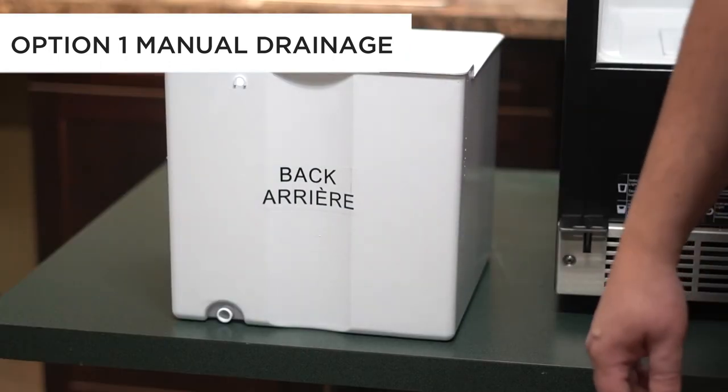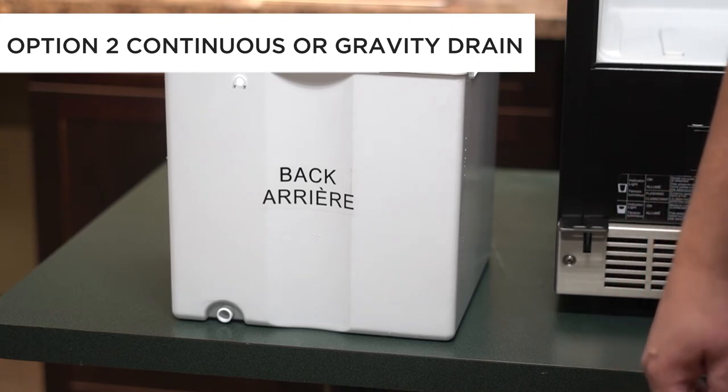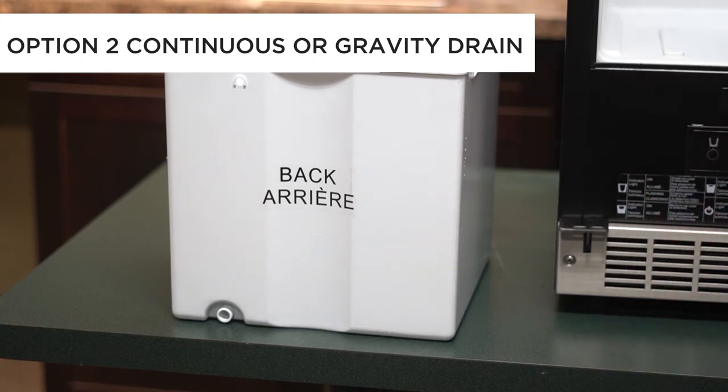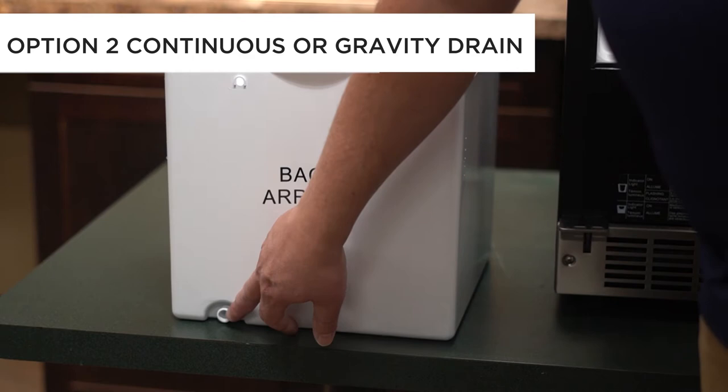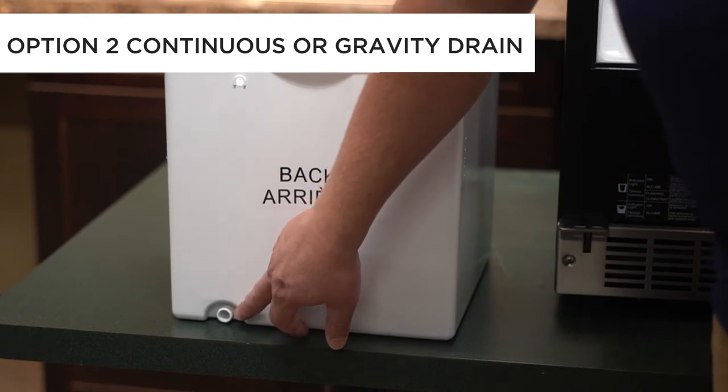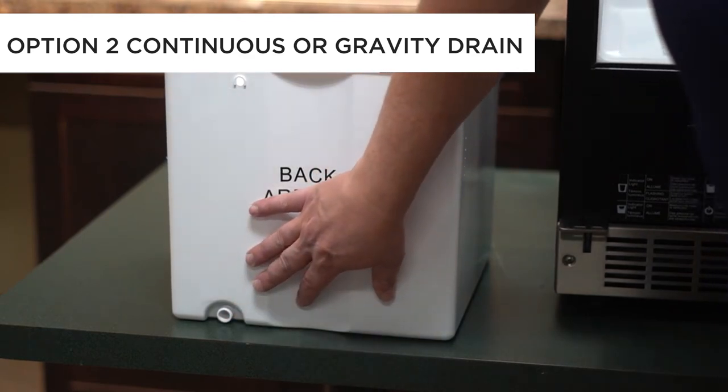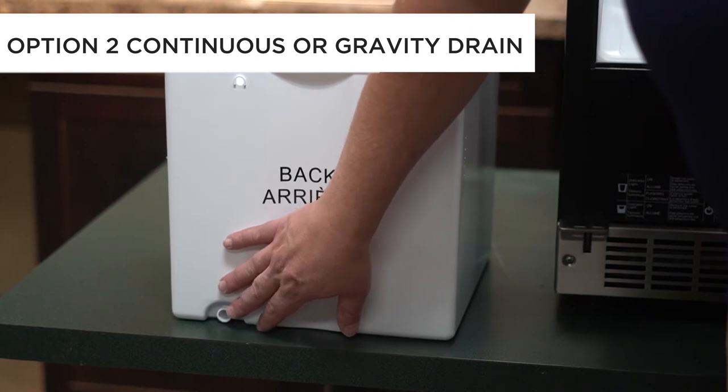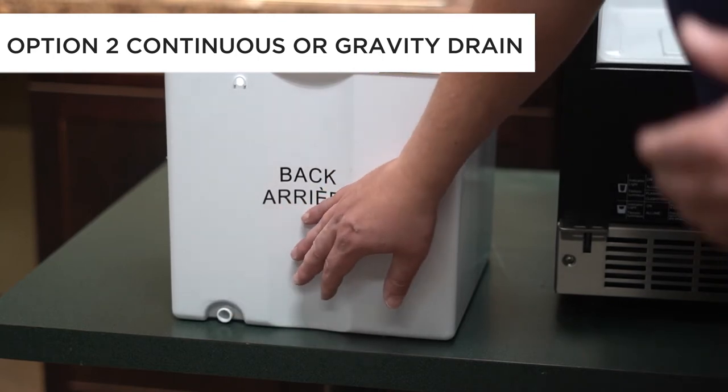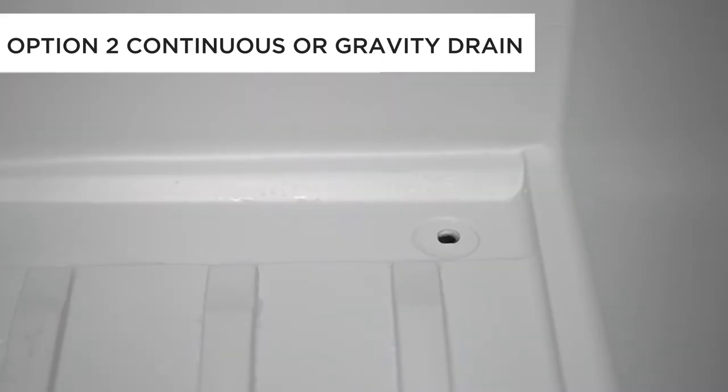For the other two drainage options, which are continuous drain or using the pump, it is important that there is no plug or cap on the rear of the bucket. This is the way it comes from the factory, so there should be nothing here to impede the flow of the water into the unit.